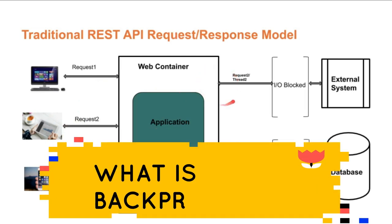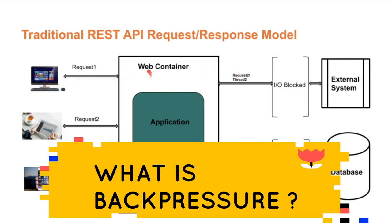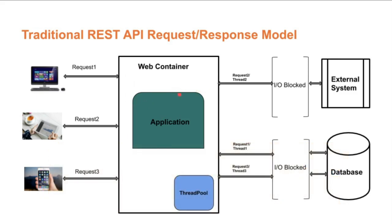What is back pressure? Whenever a user makes a request to the web application, it in turn makes a call to the external system or database. If you look at this call, it's IO blocked. Each request is handled by a request thread, and it will be waiting for the response from the external system or database. We don't know when the response will come because it depends on availability and the network. So the request thread will be blocked waiting for the response from the external system or database.